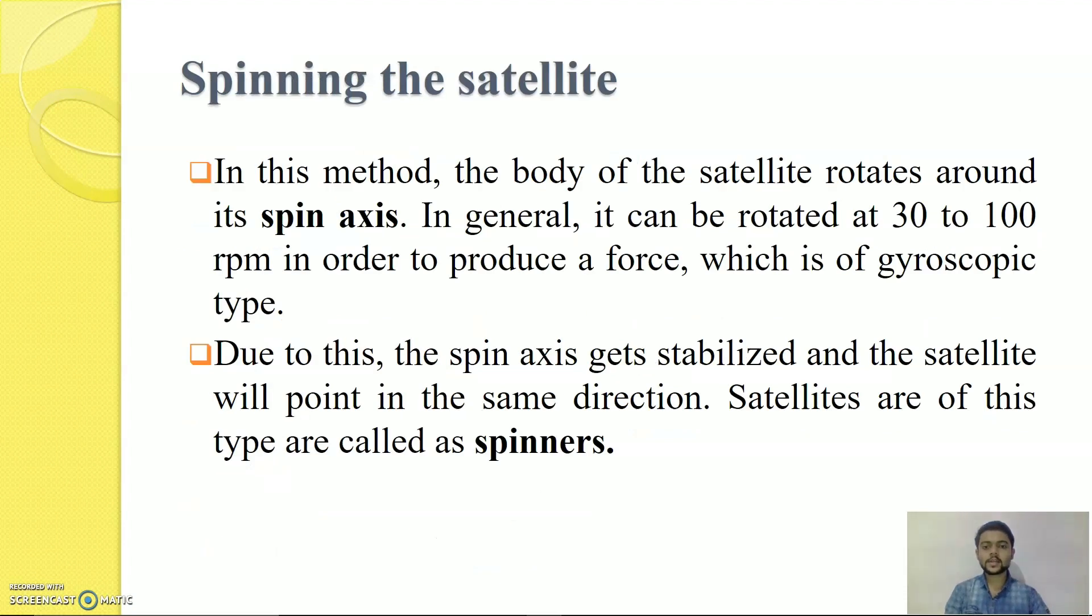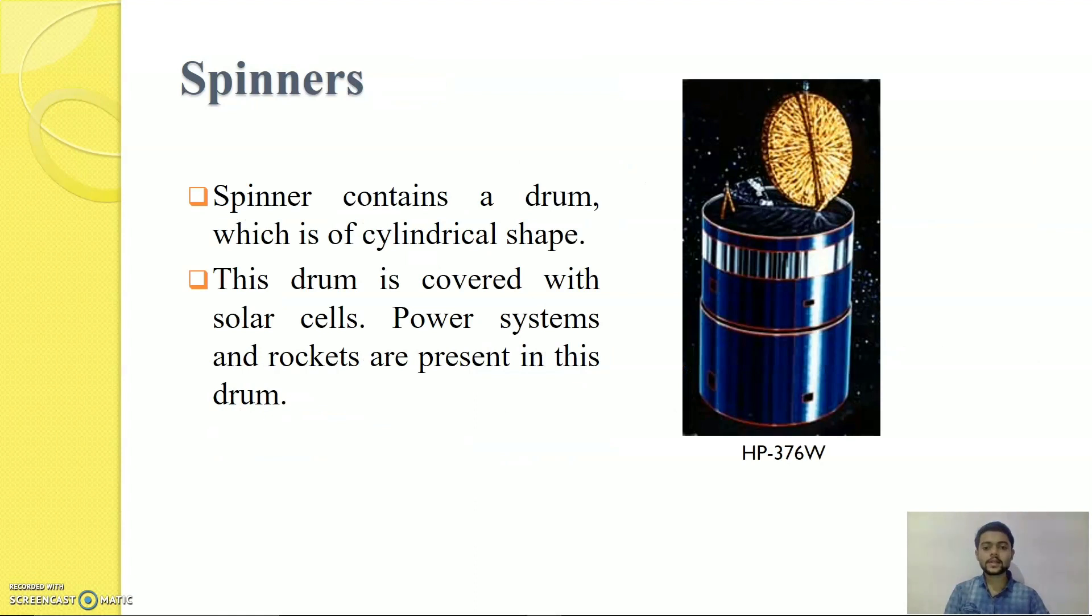Now, we will study spinning the satellite method in Attitude Control Subsystem. In this method, satellite body is rotated at around 30-100 RPM to produce a gyroscopic force which helps in bringing the satellite in its correct orbit. Due to this, spin axis gets stabilized and the satellite will point in the same direction. Satellites of these types are called spinners. In this method, you can notice that the main disadvantage of this method is you have to rotate the whole body of the satellite to bring it in its correct orbit. Spinner basically contains a drum which is of cylindrical shape. This drum is covered with solar panels to produce the power required by the satellite. Power systems and rockets are present inside this drum.